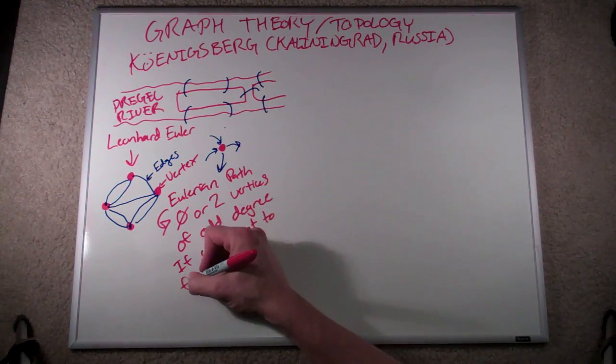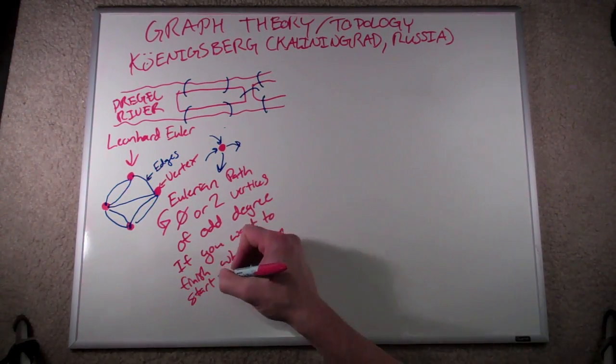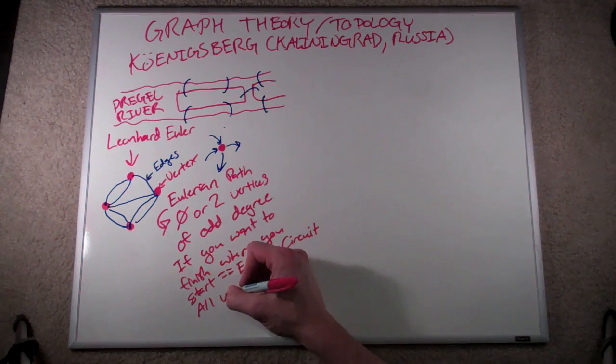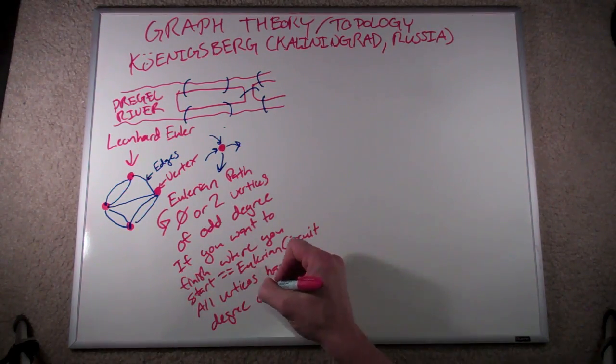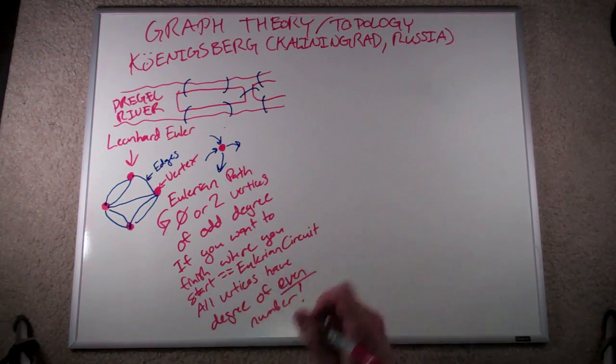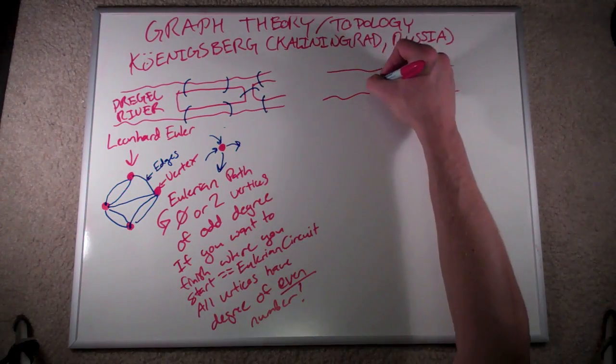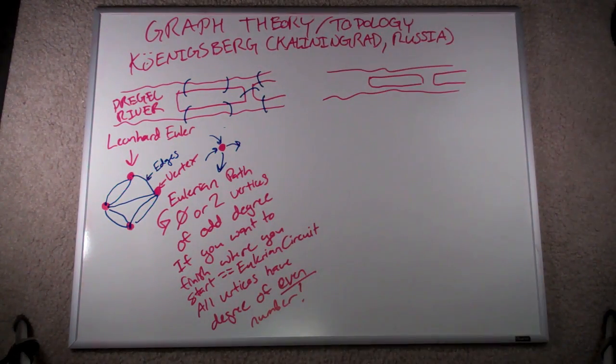Well, what if you want to end at the same point where you started? This is what's known as an Eulerian circuit, and it means that all the vertices have to have a degree of an even number. Once again, we don't have one in the seven bridges of Königsberg, but what if we recast it such that we did?